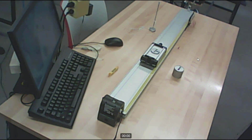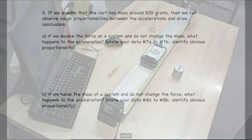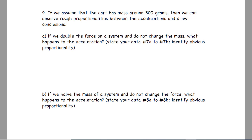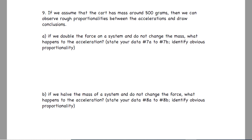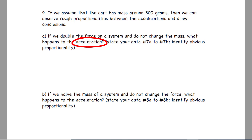Now some hints on questions 9 and 10. In question 9a: if we double the force on a system but keep the mass the same, what happens to the acceleration? Go back to question 7 and write down your actual acceleration values — real numbers. Look for an obvious proportionality: did the acceleration get twice as big, half as big, four times as big? Answer this question based on your actual numbers.